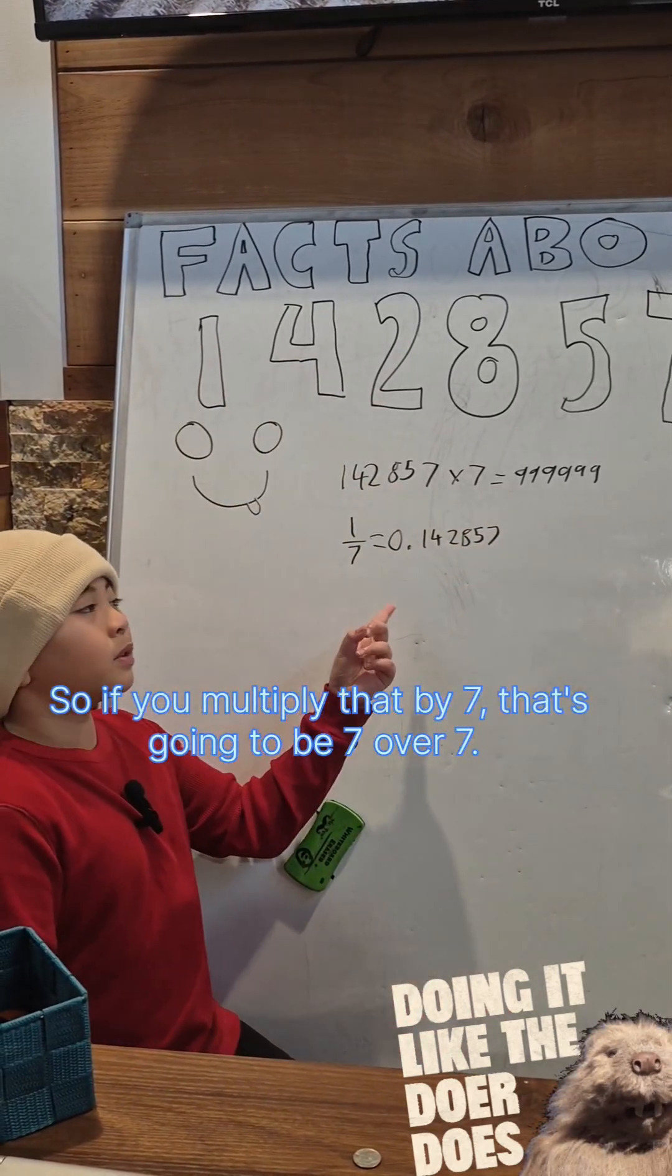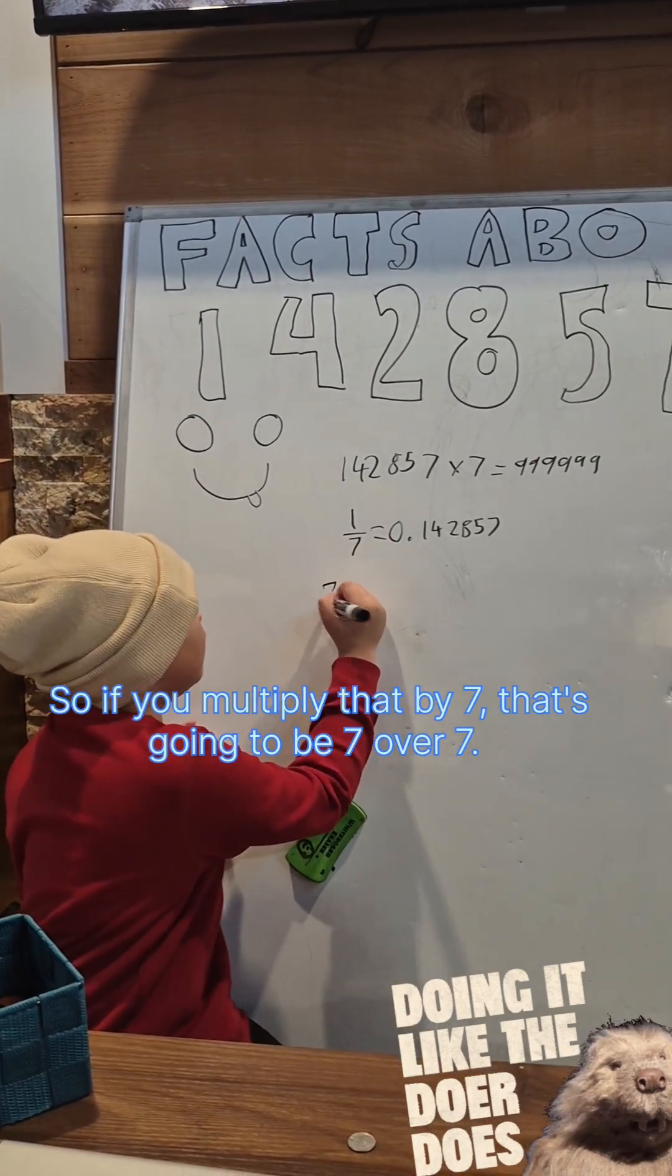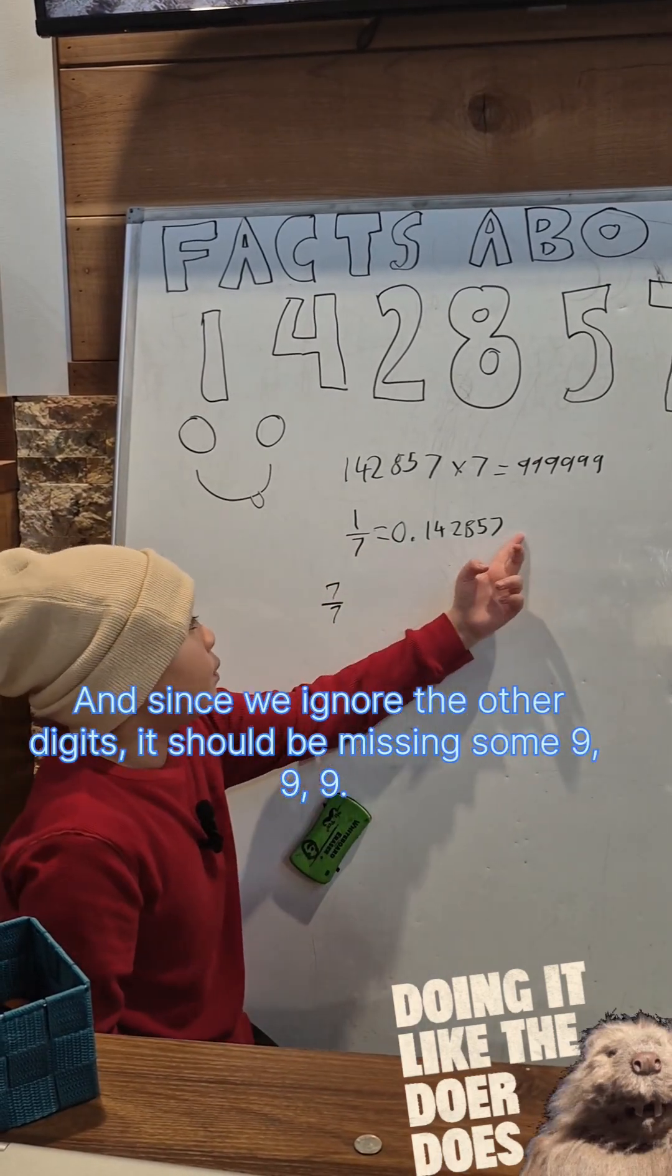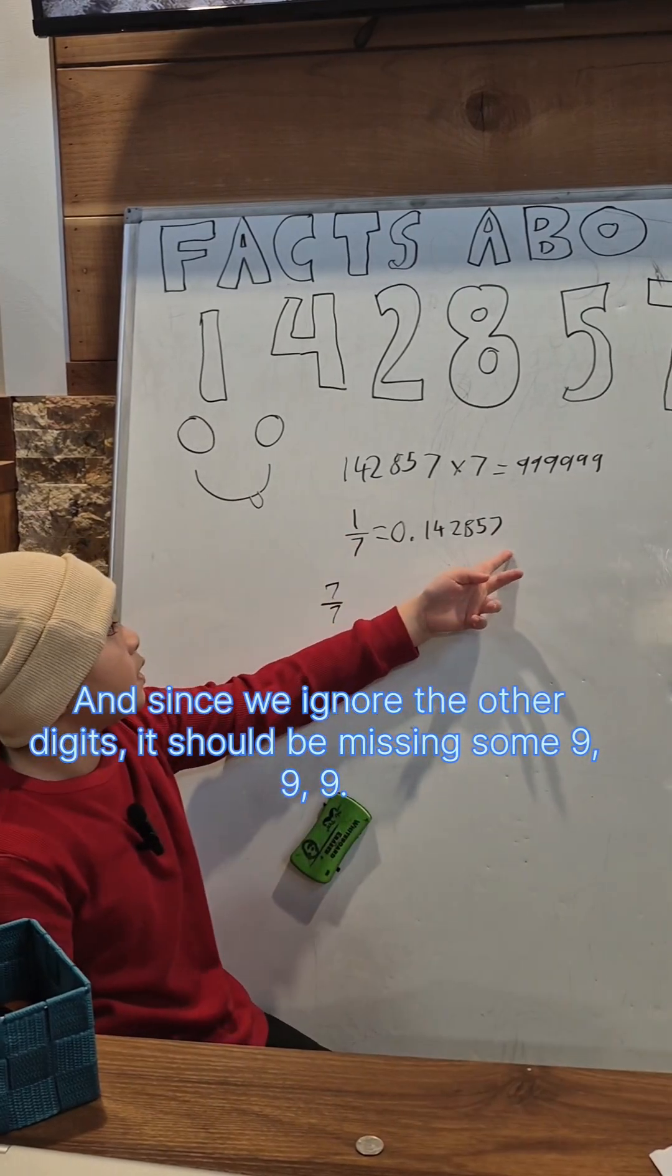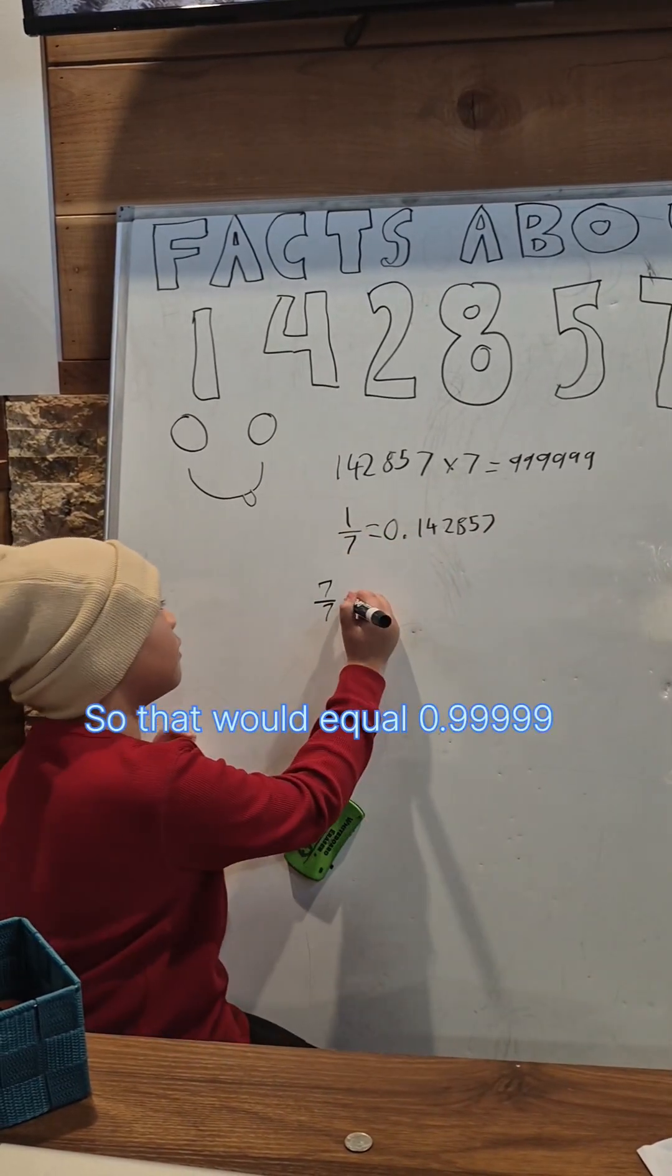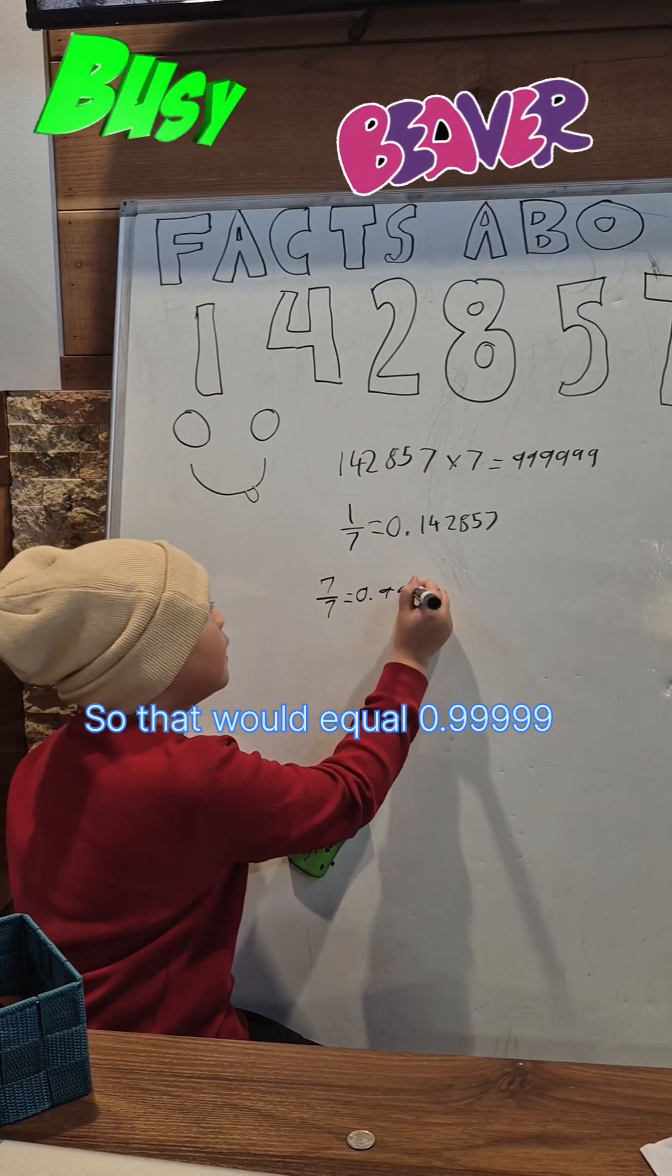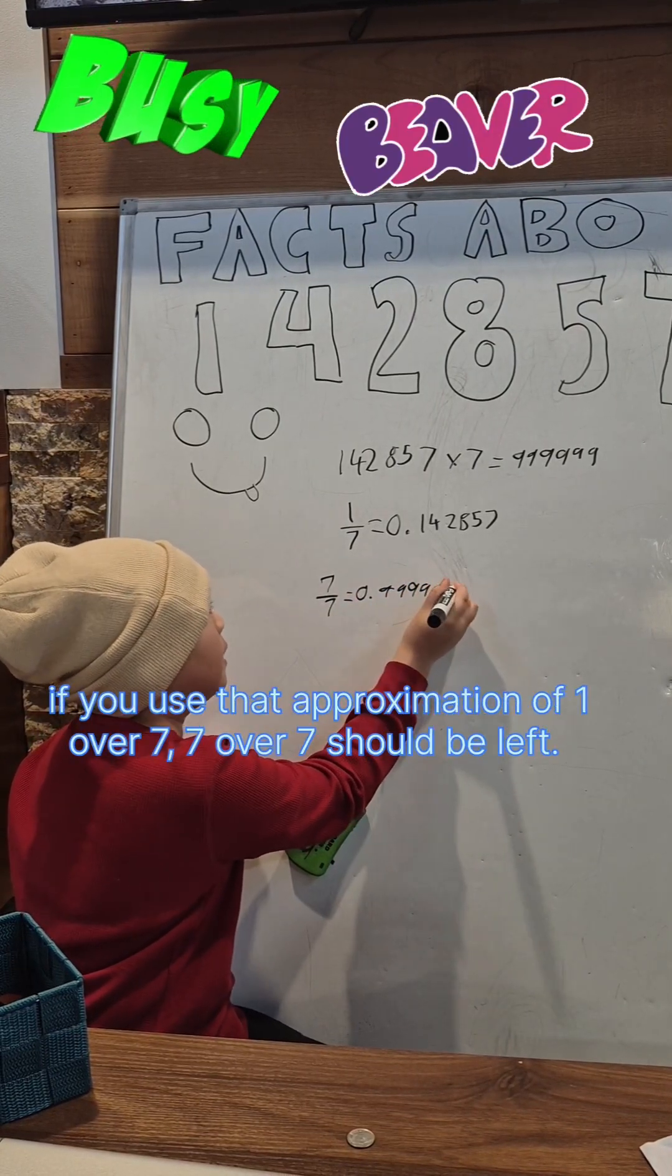that by 7, that's going to be 7 over 7. And since we ignore the other digits, it should be missing some nines, so that would equal 0.999999 if